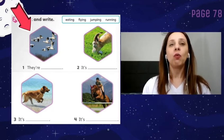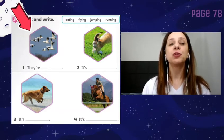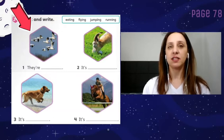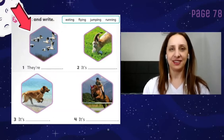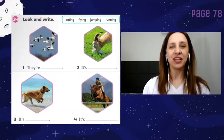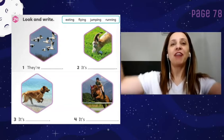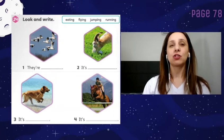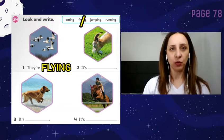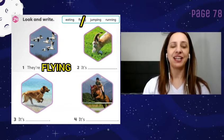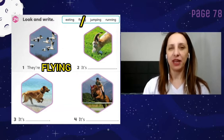Number 1. What are the birds doing? What are the birds doing? Very good! They are flying, flying, flying. So, write the word flying on the line. I will wait for you.